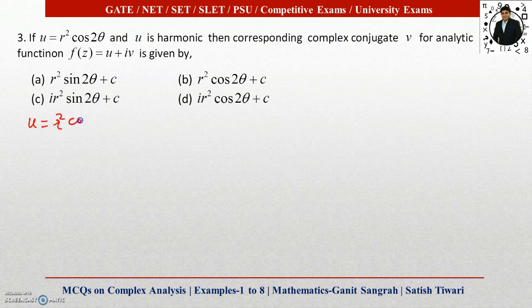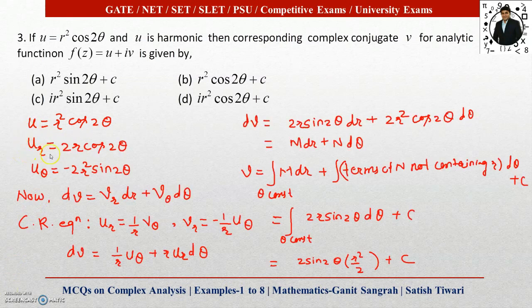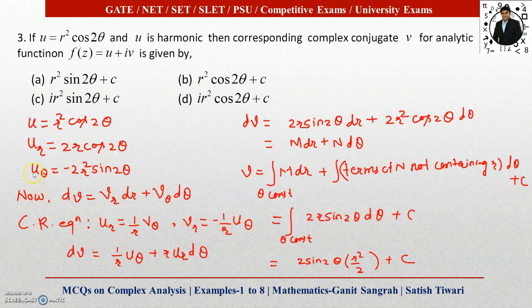Given u = r² cos 2θ, we differentiate with respect to r and θ. Differentiating with respect to r: u_r = 2r cos 2θ (since θ is constant). Differentiating with respect to θ: u_θ = −r² · 2 sin 2θ = −2r² sin 2θ (since cos differentiates to −sin, multiplied by 2 from chain rule).